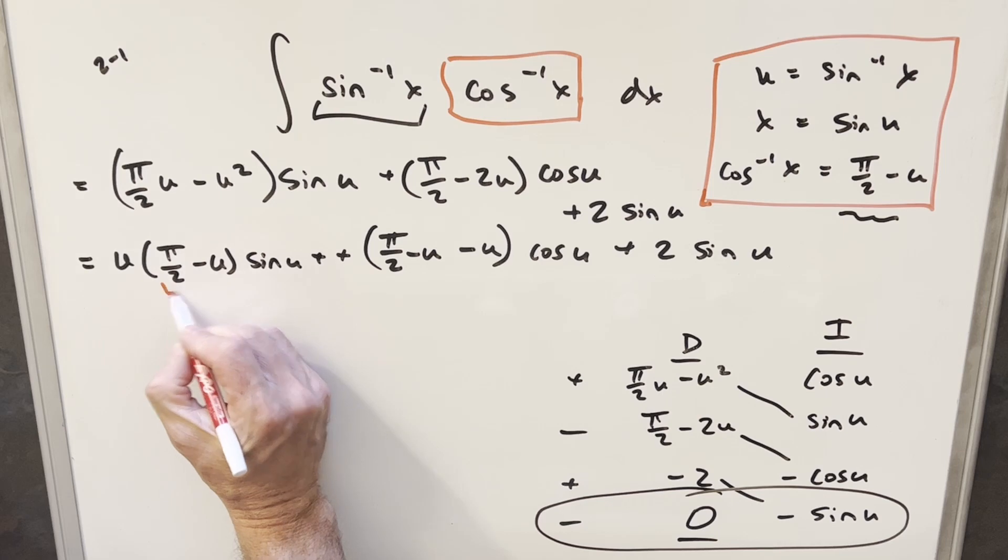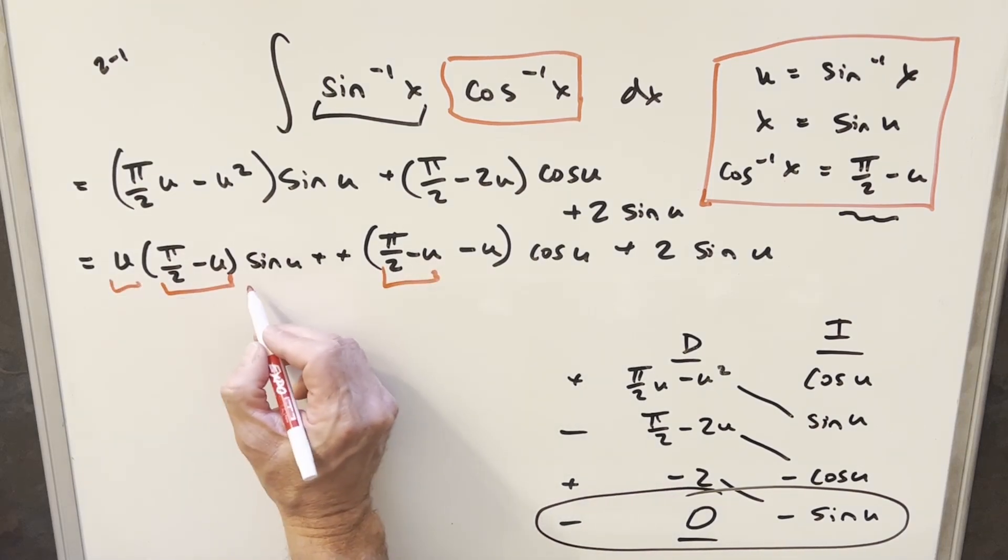We have a value for almost everything, right? We have this value. We have our u value. We have our sine value. But what about cosine of u?